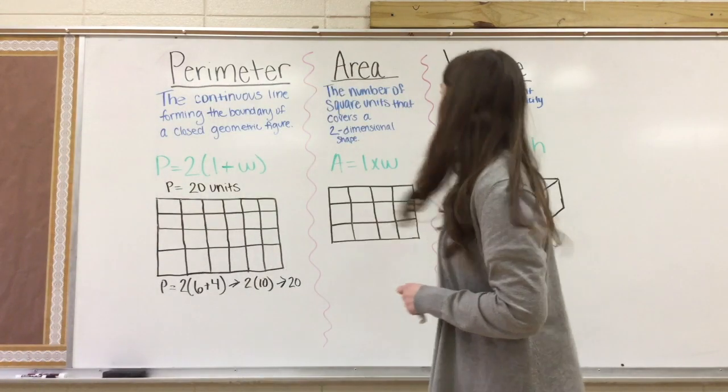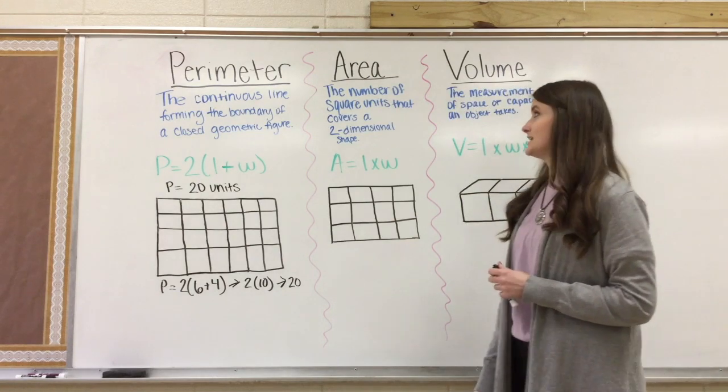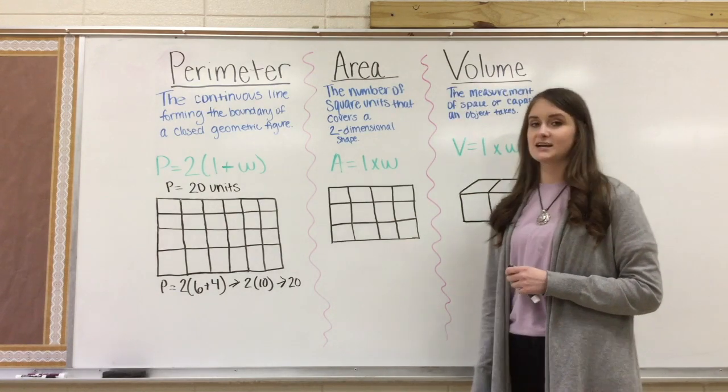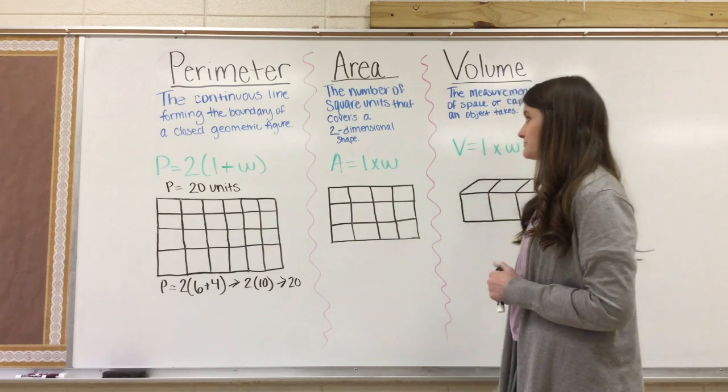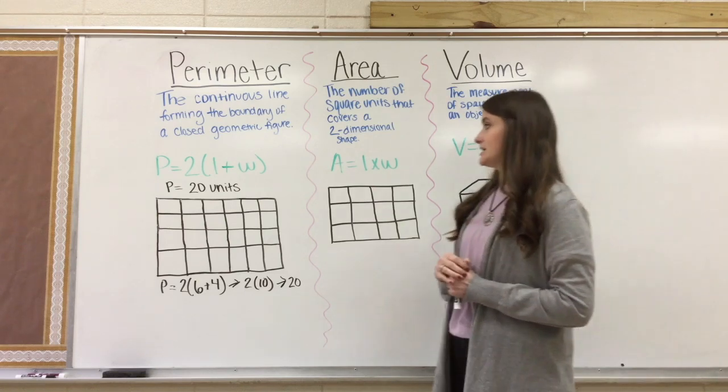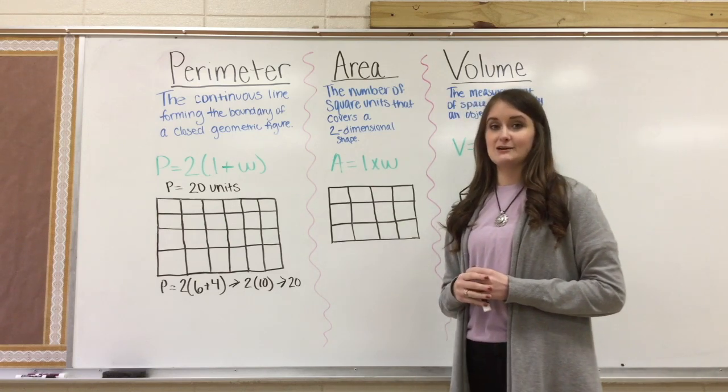Next, we're going to do area. Area is defined as the number of square units that covers a two-dimensional shape. The formula for area is A equals length times width.